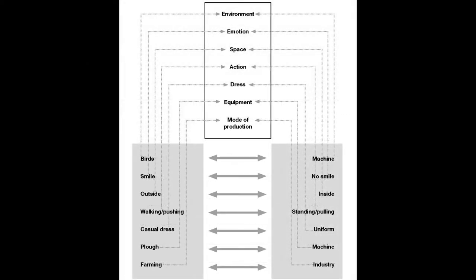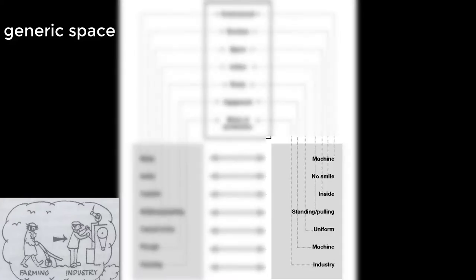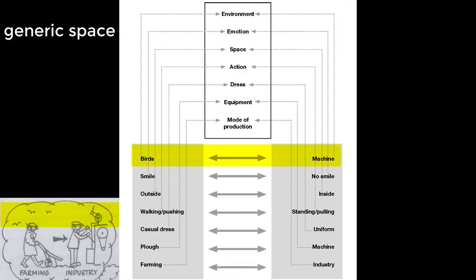In the diagram in front of you, you can see I've tried to put those out, and that gives us a generic space which captures the reason why we've made the linkages between input space 1 and input space 2. For example, birds and machine would give us the beginnings of the environment that the person is working within. You've got smile, no smile, and that really relates to emotions. You've got outside/inside—that is the space the person is working with. You've got walking/pushing on one side and standing/pulling on the other—that's the actions involved.